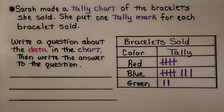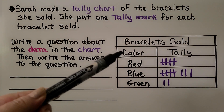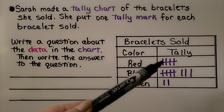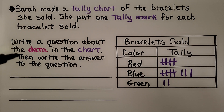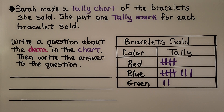Let's take a look at our tally chart. The title is 'Bracelets Sold.' The colors of the bracelets are red, blue, and green, with tally marks showing how many were sold. The task is to write a question about the data in the chart and then write the answer to that question. Can you think of a question for the data in this tally chart?